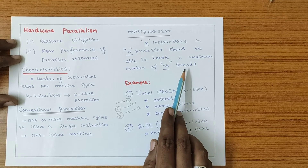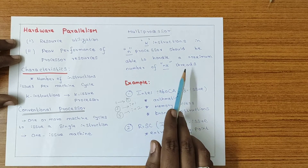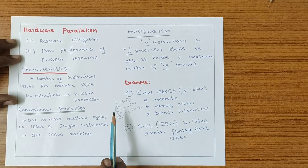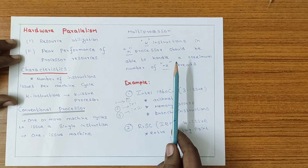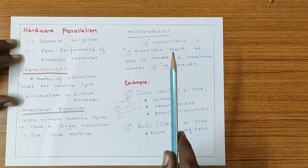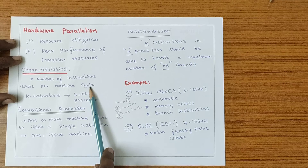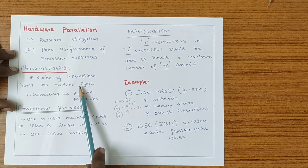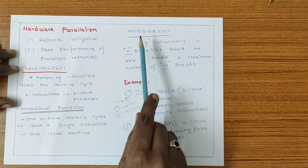A thread is a control flow of execution — it is a part of the program, which we will discuss later. To summarize: the multiprocessor handles multiple issues for multiple instructions across different processors. The K-issue processor handles K instruction issues per one clock cycle. The conventional processor handles one issue per clock cycle, and the multiprocessor handles N×K because it uses multiple processors.